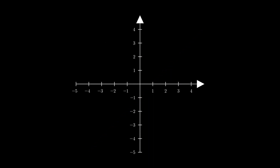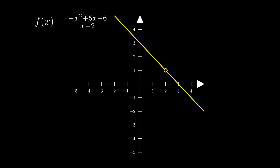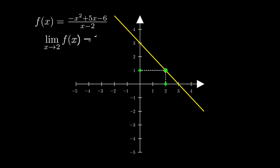Now, let's look at a function where it is not defined at a point, in this case at x equals 2. If we want to find the limit of the function as x approaches 2, we need to remember that the key idea with respect to limits is that we only care about what's going on near x equals 2, not at the value itself. Again, if we look at the inputs that are near x equals 2, and then look at the corresponding output values, those values appear to be approaching 1. Thus, the limit of the function as x approaches 2 is 1.